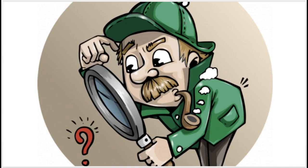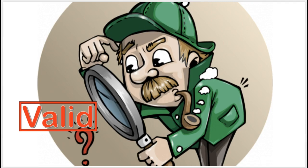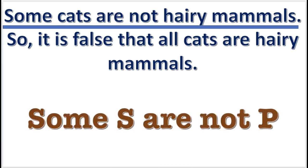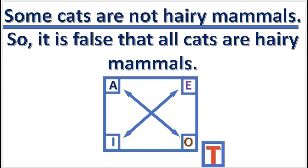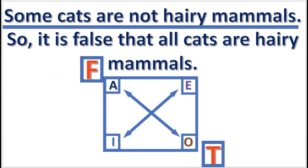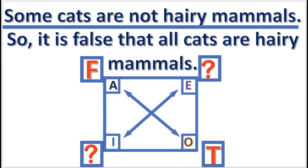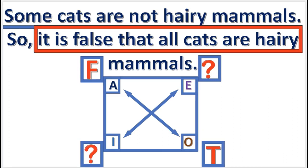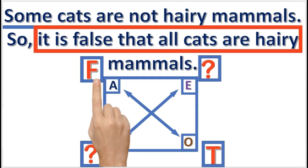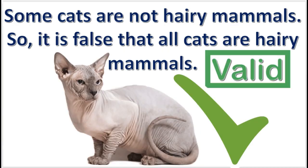Now let's use the modern square of opposition to test some inferences. We'll check to see if the inferences are valid. We first begin by assuming that the premise is true. Since the premise is an O proposition, we will enter a T beneath the O in the square. Next, since O is true, we know that A is necessarily false, so we enter an F above the A in the square. Since no other inferences are possible, the E and I propositions have undetermined truth value. Finally, we check the conclusion. The conclusion claims that the A proposition is false, and indeed A is false. The conclusion of the inference is true, so the inference is valid.